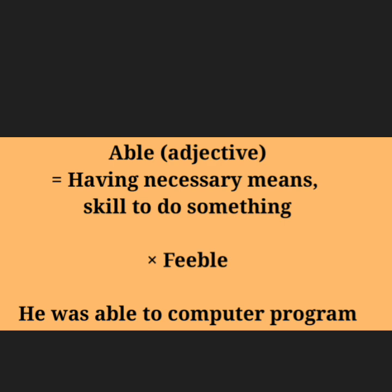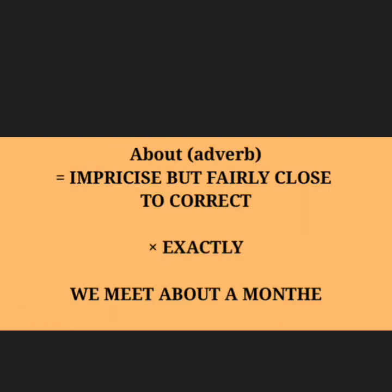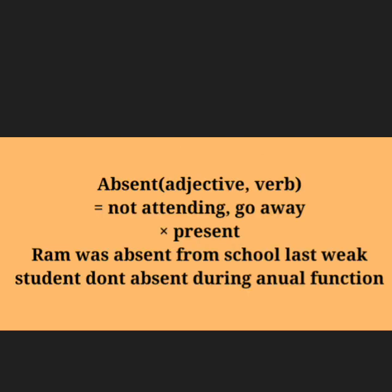You have the ability to learn English. About — adjective/adverb. Meaning: imprecise but fairly close to correct; approximately. Antonym: exactly. Example: 'We meet about once a month.'